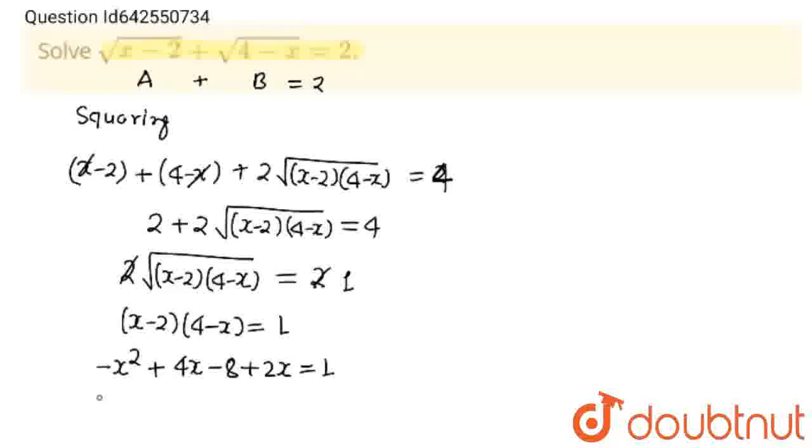Now I am going to bring this whole term to RHS. This will become x square plus 2x minus 6x minus 6x and minus 8 will go to that side plus 9 is equal to 0 and this will become x minus 3 to the whole square is equal to 0.